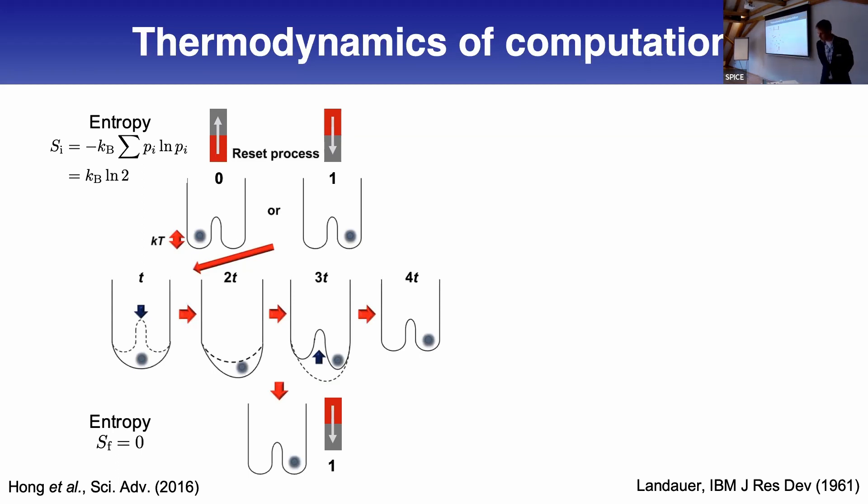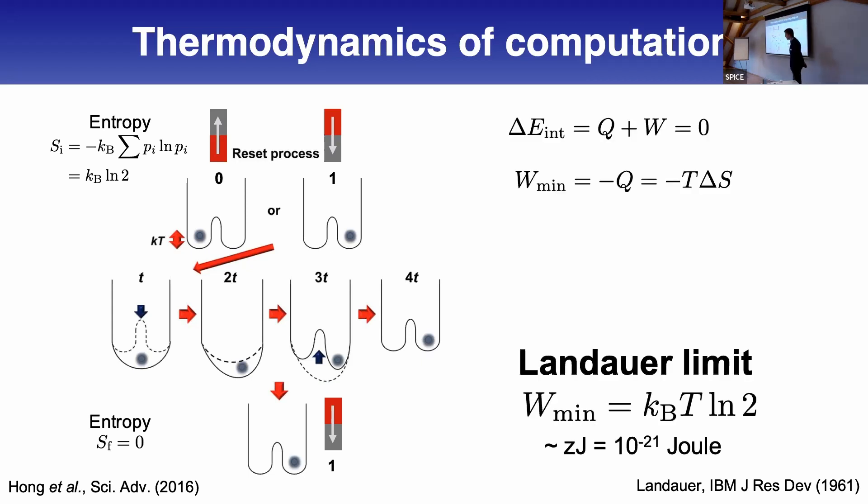We have maximum entropy Kb ln 2 if there are just two states. If we have multiple states, we get Kb ln n. The final state is very definite, just one. In this process you change the entropy, and the amount of work you need is the negative of the heat dissipated. Using Clausius theorem, this gives you KbT ln 2, which is on the order of zepto joule at room temperature.